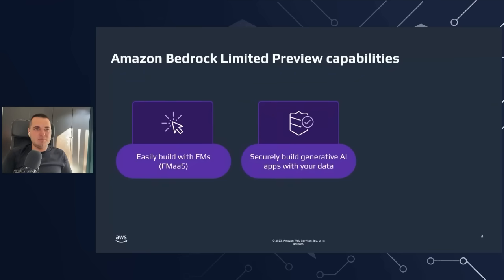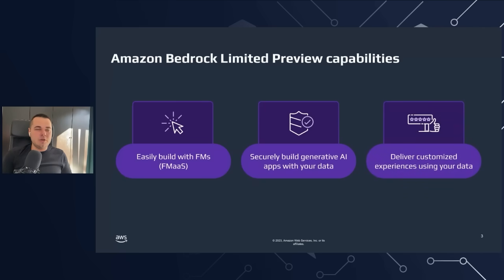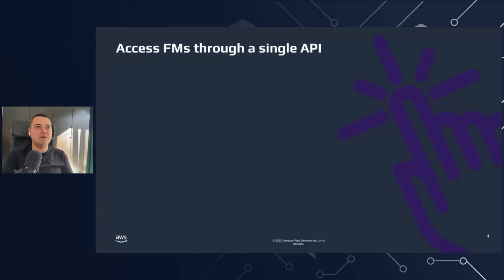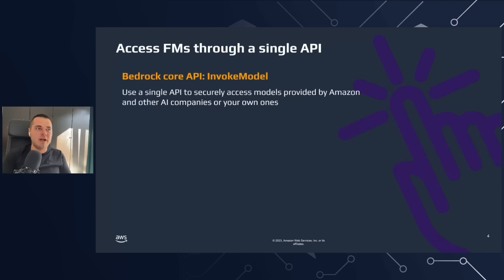It has security measures built-in, and if the base models are not enough for you, you can always fine-tune them using your own dataset and Bedrock's APIs. Amazon Bedrock is quite a simple service, and most of us will be using its core API called Invoke Model, which lets you select a model and send a prompt to a particular model provider. You can access models from Amazon and other AI companies, or your own fine-tuned ones.